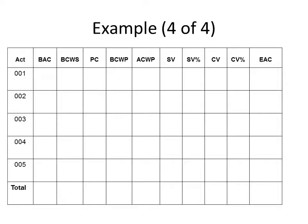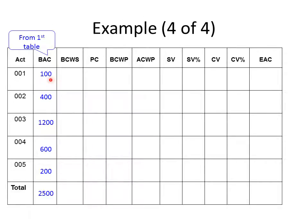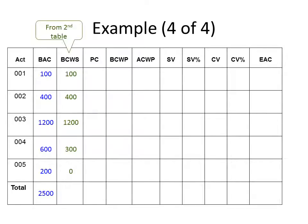Now we use the actual reported site data to complete our earned value analysis and estimate the final cost of completion based on progress by end of month four. The first column in the EVA table is budgeted cost of work — for activity one this is $100,000, and the total original cost plan for the project was $2,500,000. We also load the budgeted cost of work schedule column based on the original cost plan through month four.